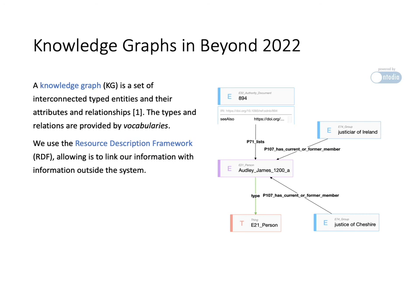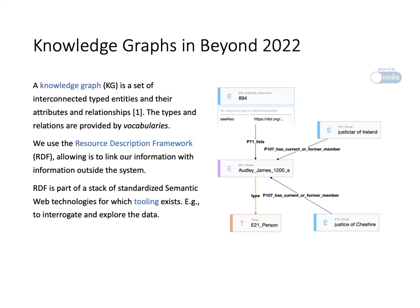In our knowledge graph we will find that this person is listed in a document of the type authority document and that document has a URI pointing to something outside our system. If we were to put that URI in a browser for instance we will be presented with a page providing information about James Audley.